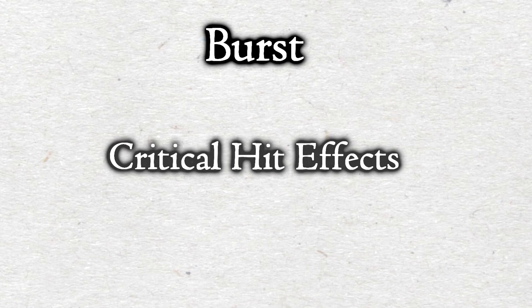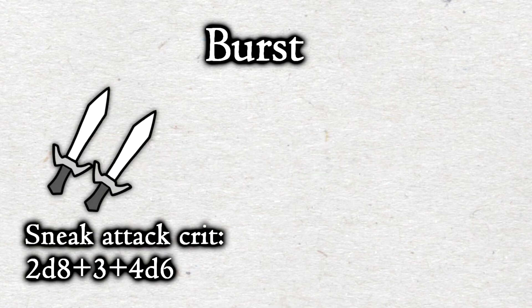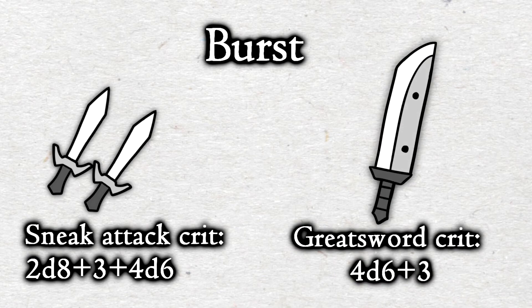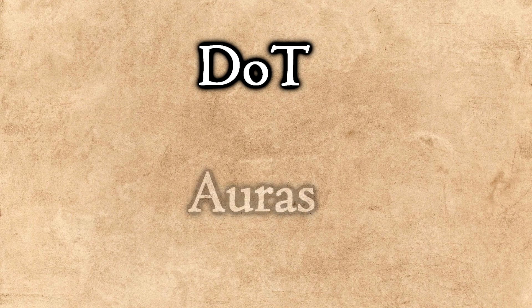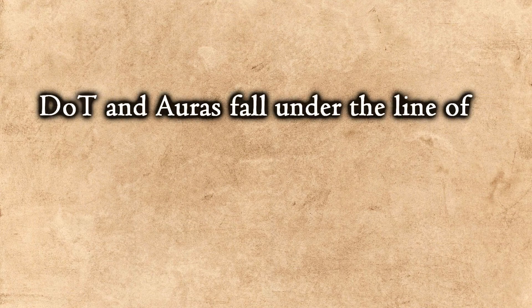Burst damage refers to critical hit effects — for example, if you're using a creature with sneak attack, its critical hit will outpace the critical hit of an enemy using a greatsword. After calculating DPR, burst, and AOE, you also need to calculate DLT and auras.